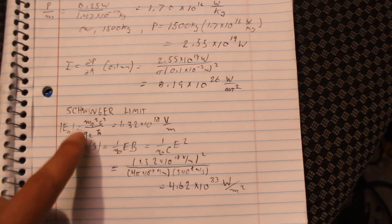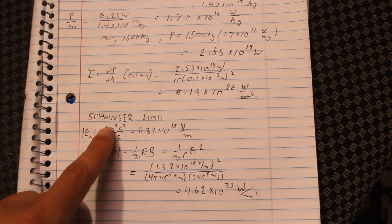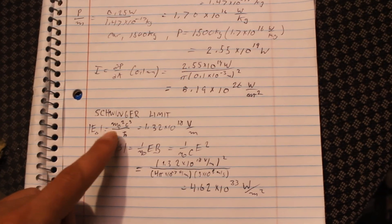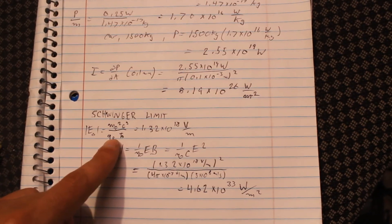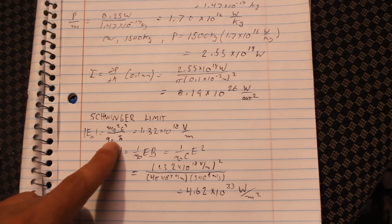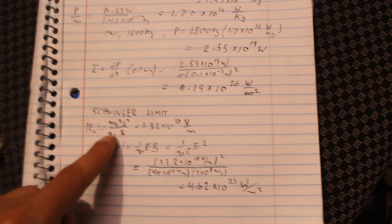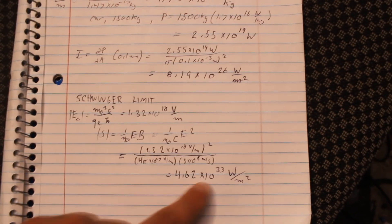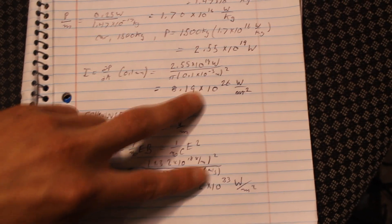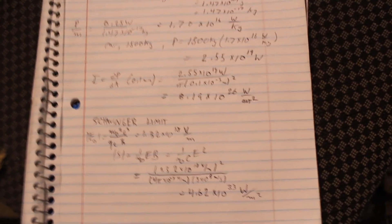Now, this actually starts to approach something called the Schwinger limit, which describes the intensity of a laser or electric field required to make particles of matter and antimatter just start arising from nothing out of the vacuum, basically creating a hernia in space-time. And now, that number is still quite a few orders of magnitude higher, but it just shows how strong of a laser you'd actually need to levitate something like a car.